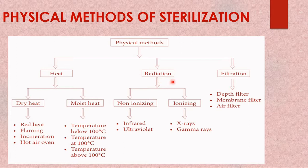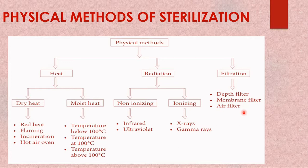The second type is radiation, which has two subtypes: non-ionizing radiation and ionizing radiation — both involved in the physical sterilization process. Filtration also comes under physical methods; different types of filters are used for heat-sensitive substances.